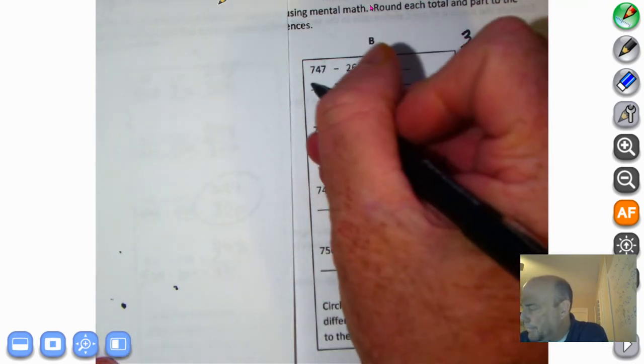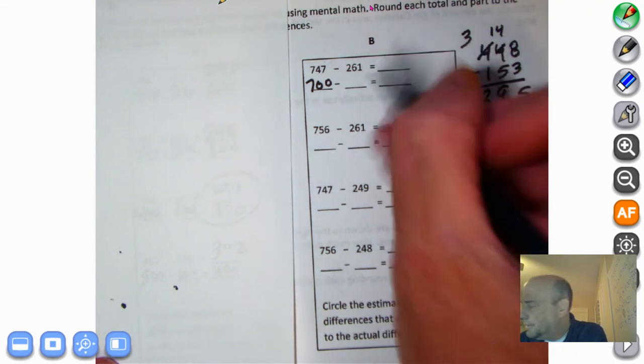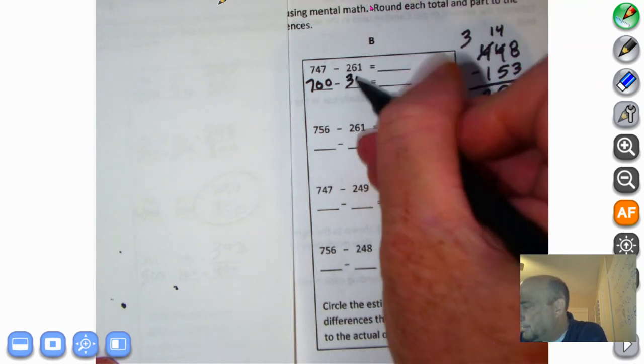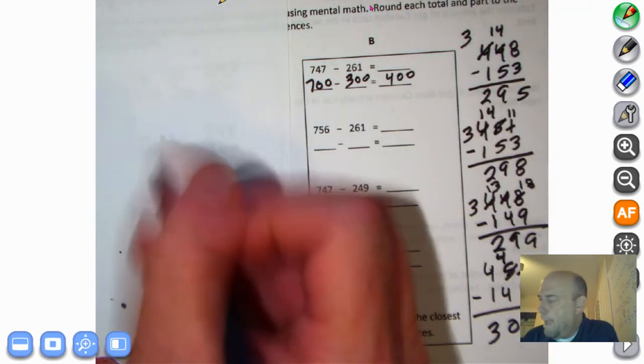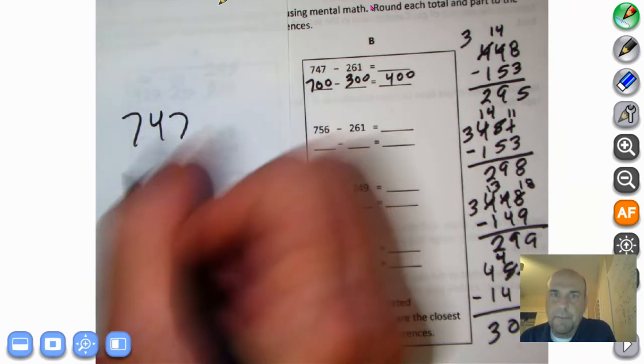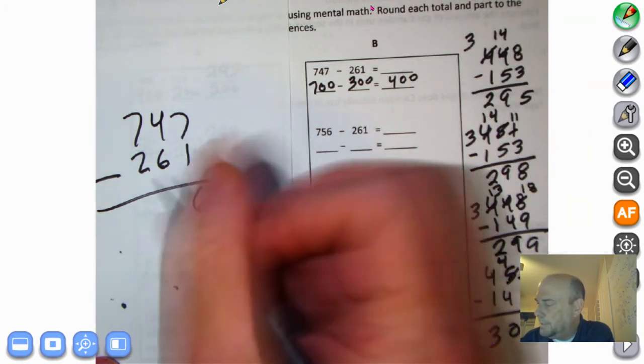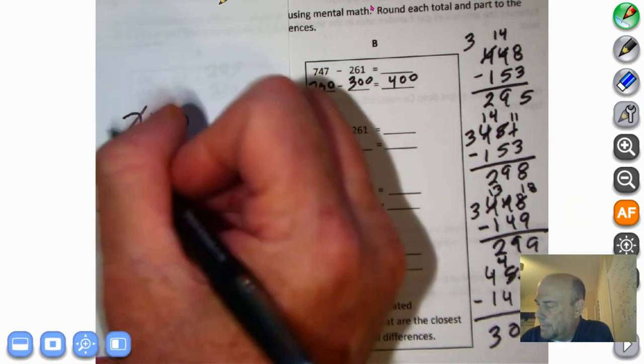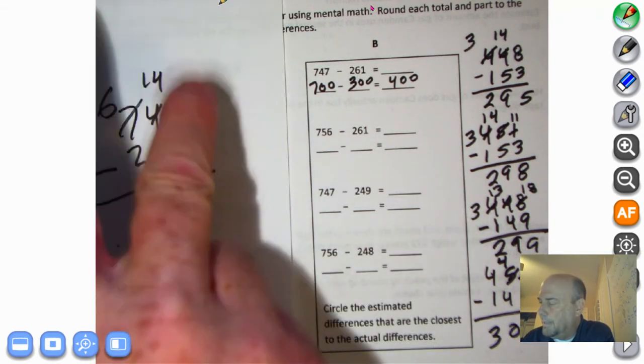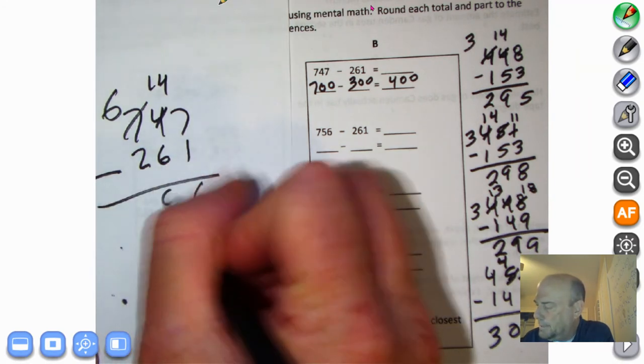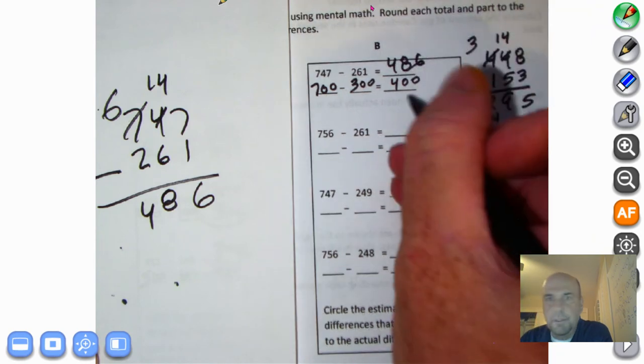747 is less than 750, so we round down to 700. 261 is more than 250, so we round up to 300. 7 minus 3 is 4, so 700 minus 300 is 400. Now the actual 747, reminds me of an airplane, minus 261. Here we go. 7 minus 1 is 6. I can't take 6 tens away from 4 tens. I'm going to decompose. 10 plus 4 is 14. 14 minus 6 is 8. 8 tens. 600 minus 200 is 400, so we have 486. Not too close. We're 86 away.